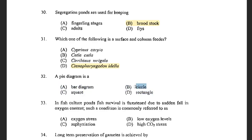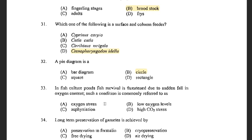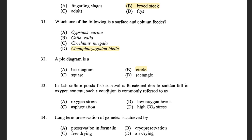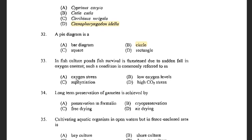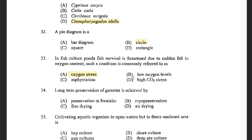Next question: In fish culture ponds, fish survival is threatened due to sudden fall in oxygen content. Such a condition is commonly referred to as — options are oxygen stress, low oxygen levels, asphyxiation, and high CO2 stress. The answer is oxygen stress. The sudden fall brings stress in the fish, so the answer is oxygen stress.